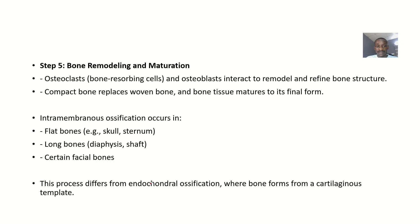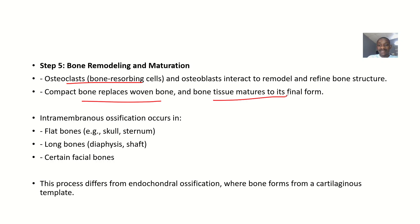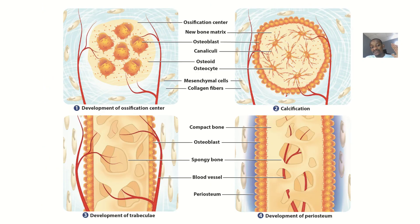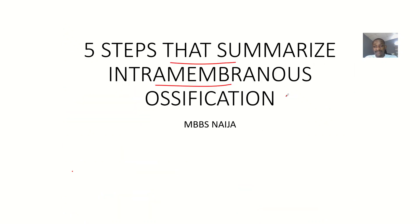Step five is bone remodeling and maturation. Osteoclasts — the bone-resorbing cells — and osteoblasts interact to remodel and refine the bone structure. Compact bone replaces the woven bone, resulting in a stronger bone type, and the bone tissue reaches its final form. Those are the five steps that define intramembranous ossification.